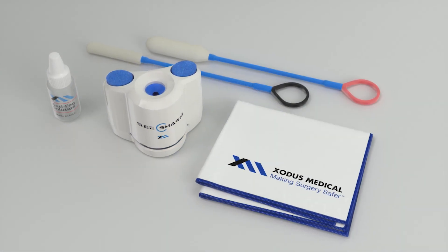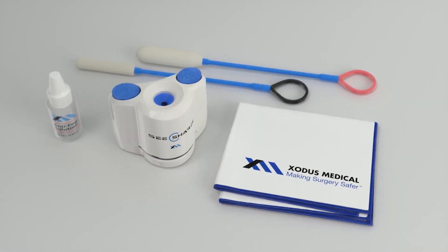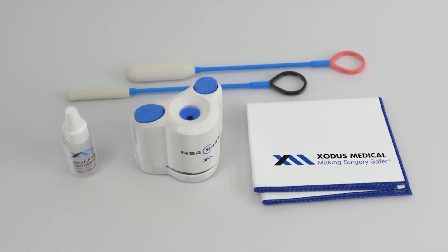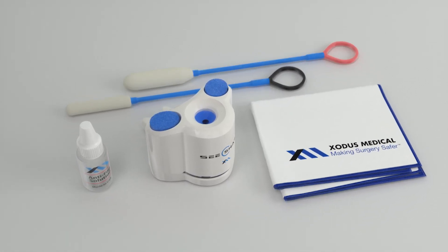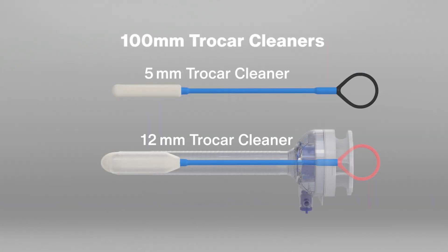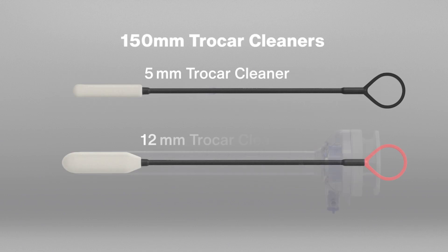Each C-Sharp kit includes one C-Sharp unit, a white balancing microfiber cloth, one 5mm trocar cleaner, one 12mm trocar cleaner, and one bottle of anti-fog solution. Kits are available with cleaners for both 100 and 150mm trocars.